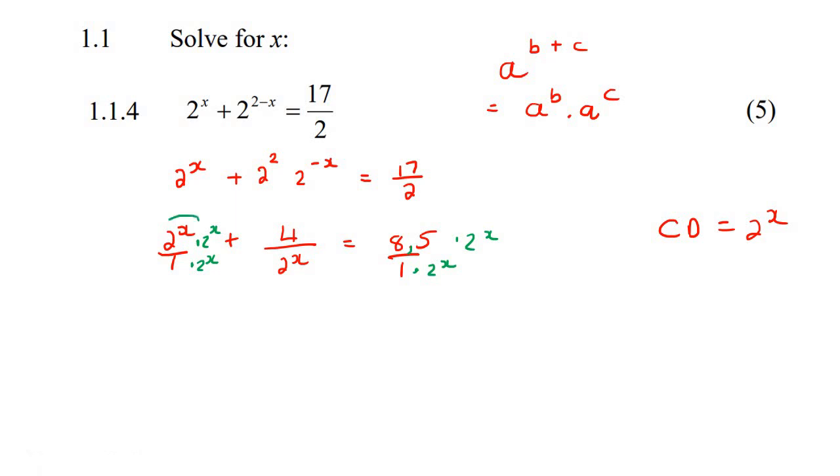Okay, so over here be careful, don't change that to a 4. Remember if you have a to the 3 times a to the 2, then you add the exponents, so if you have 2 to the x times 2 to the x, then you add the exponents, so x plus x is 2x.